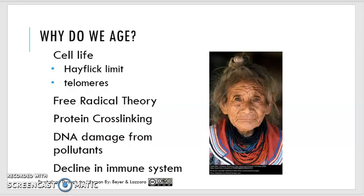There are different theories about why we age. Our cells divide and divide, and the limit of when they stop dividing is the Hayflick limit. We also have telomeres, and individuals with shortened telomeres face more challenges than those with longer telomeres — that's part of the DNA process. There can also be DNA damage from environmental factors, and we see a general decline in our immune system, kind of our body's way of winding down.